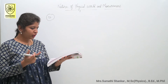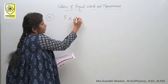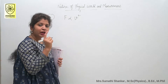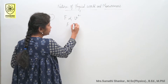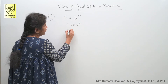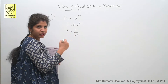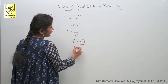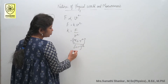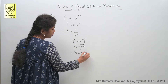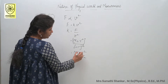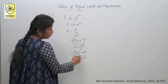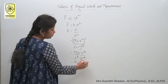Question number 12: force is proportional to the square of velocity. Find the dimension of the proportionality constant. Writing F equals K V², so K equals F by V². Dimensional formula: M L T⁻² divided by (L T⁻¹)² equals M L T⁻² divided by L² T⁻², which simplifies to M L⁻¹ T⁰. Option D is correct.